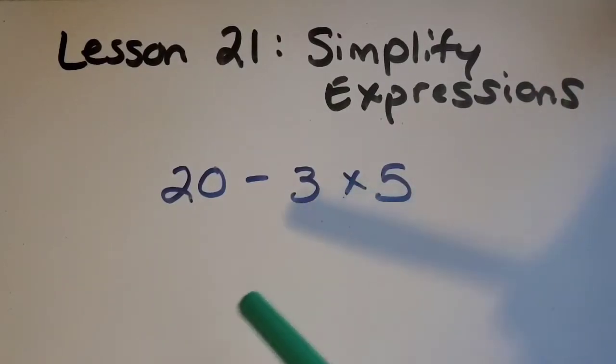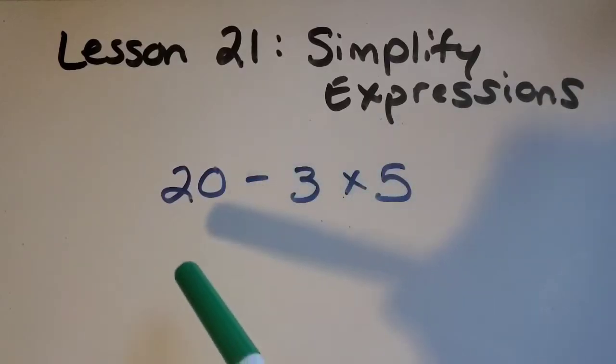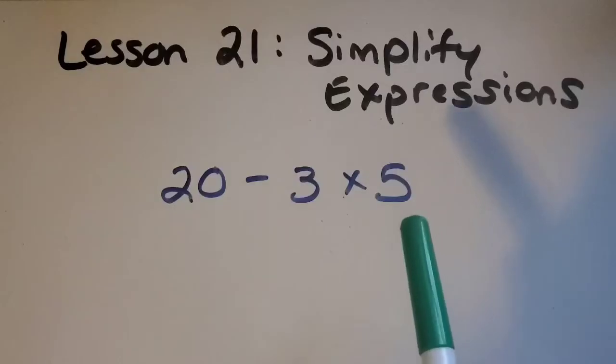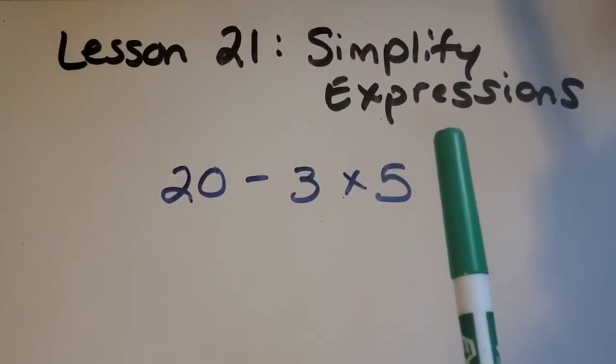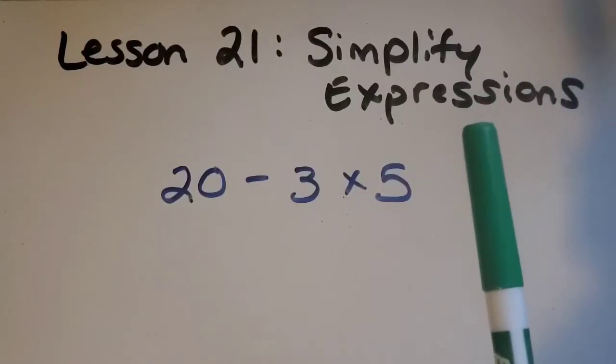We are going to be working with expressions, and an expression is a list of numbers and operations and it does not have an equal sign. We will move on to equations next after this lesson. Equations have equal signs, expressions don't. So we're going to be simplifying this expression by getting it down to just one answer, and then it will be more simple than what it is right now.